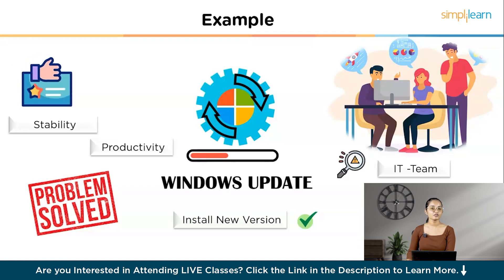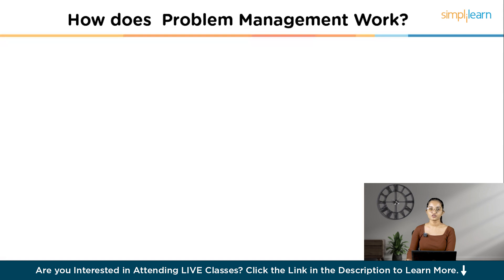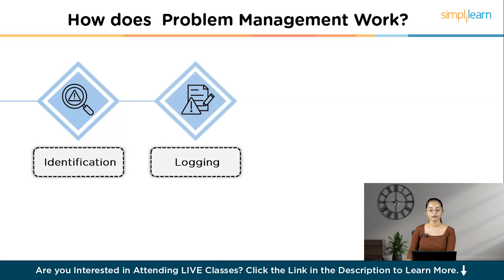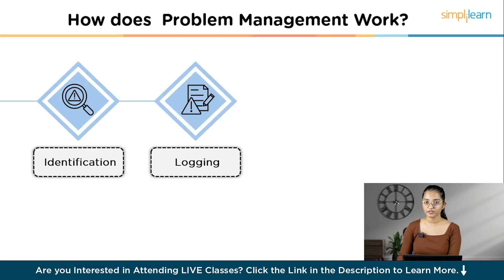Let's discuss how problem management works by breaking down the stages. First, Problem Identification: spotting potential problems through reported incidents or by monitoring your system. For example, the IT team notices frequent system crashes reported by employees, flagged during routine monitoring and through helpdesk reports. Second, Problem Logging: once the issue is identified, the IT team logs all relevant details into their management system, including the affected service, impact on employee productivity, and any error messages or related documents.